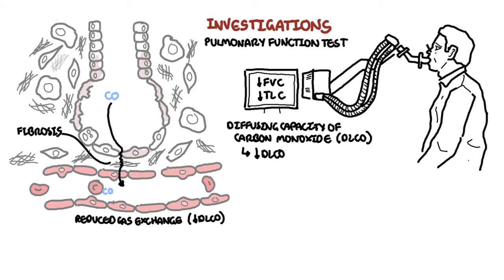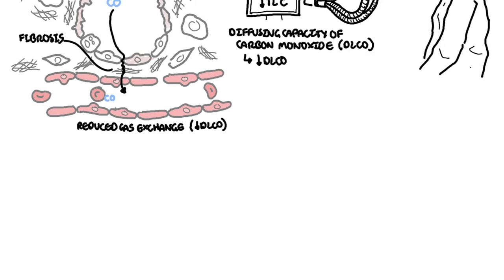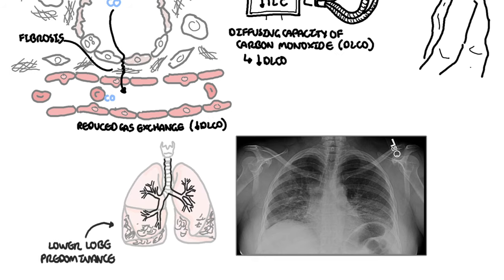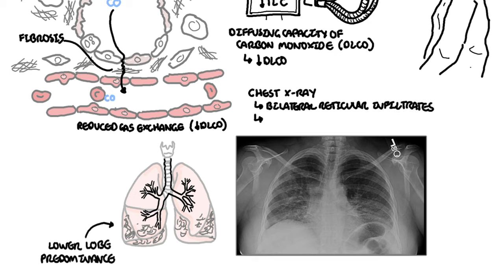Here is a chest X-ray of someone with idiopathic pulmonary fibrosis. An important clinical pearl is that IPF typically has lower lobe predominance. A chest X-ray may be normal early in the disease, and this can evolve to bilateral reticular infiltrates, hazy opacities, and reduced inspiratory lung volumes in established disease.